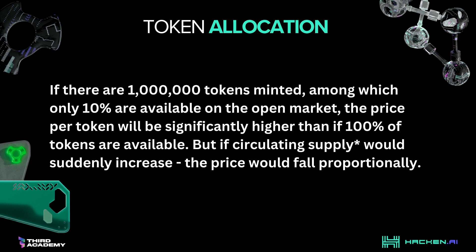If there are a million tokens minted, among which only 10% are available on the open market, the price per token would be significantly higher than if 100% of the tokens are available. But if the circulating supply suddenly increased, the price would fall proportionately. Therefore, we need to understand which parties control which amounts of tokens and where they are allowed to sell them on the market.